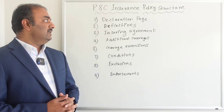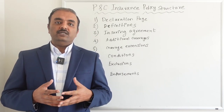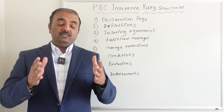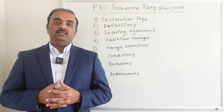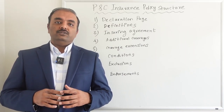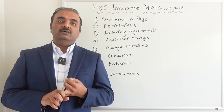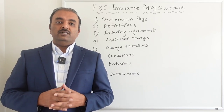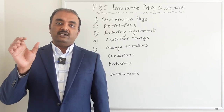The second section is definitions. Definitions are very important because they clarify the meaning of each terminology used within that contract. For example, if you say 'who is insured,' the definition section will say anyone who stays in that home — the named insured, a spouse, any immediate relatives, or their dependents.